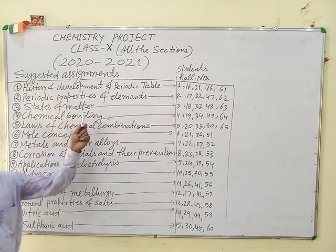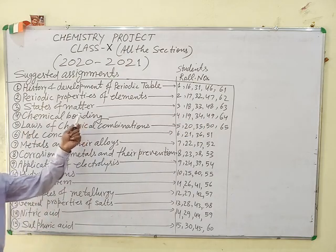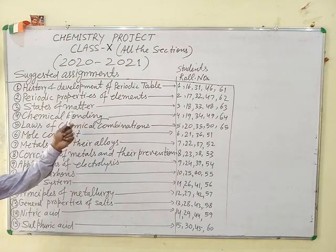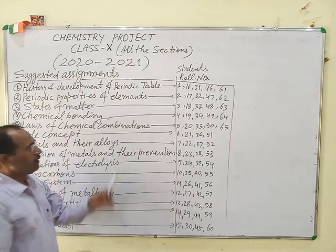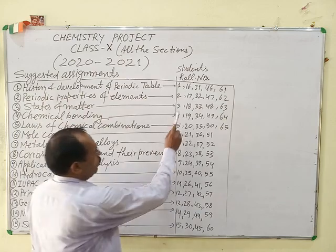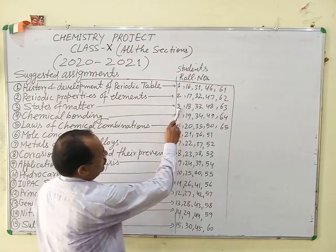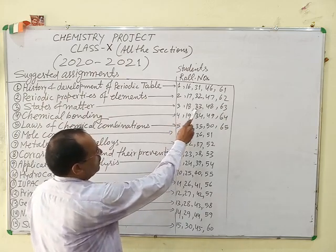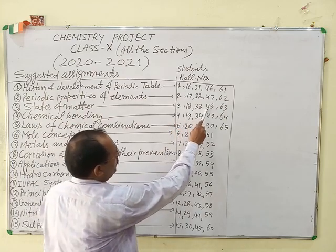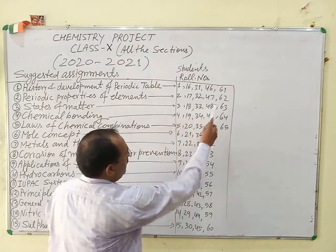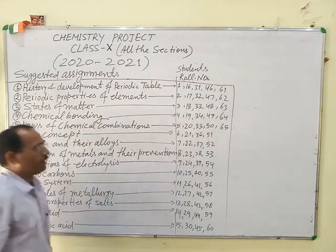States of matter — that is, solid and various states of matter — are for roll numbers 3, 18, 33, 48 and 63.